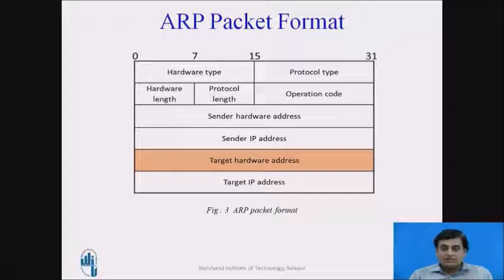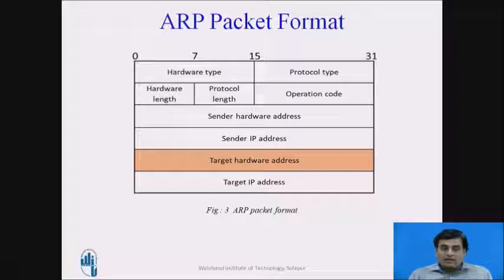The next field is sender's hardware address, a variable-length field containing the source hardware address. Following that is the sender's IP address, which contains the source IP address. The next field is target hardware address, which contains the target's hardware address and is present only in the reply packet. The last field is target IP address, which contains the IP address of the target machine.